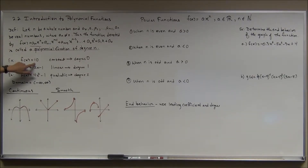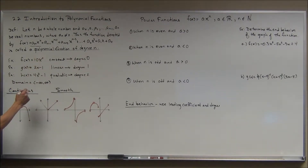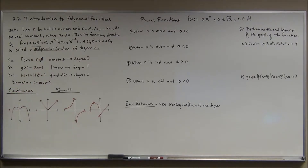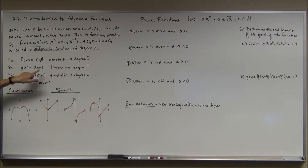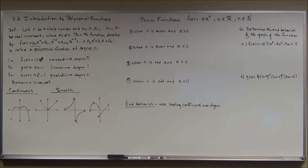Here are three simple examples. A constant function like f(x) = 10 is considered degree zero because x to the zero power is just one. Then f(x) = 2x - 1 is a linear function of degree one. And from section 2.1, a quadratic function has x to the second power — degree two. Degree three is called cubic, degree four is quartic, degree five is quintic. The domain for any polynomial function is all real numbers.